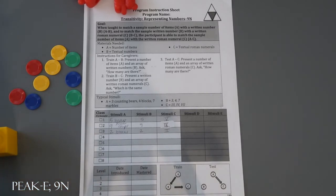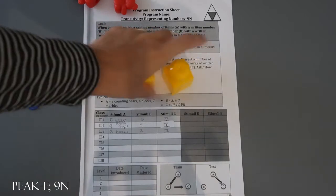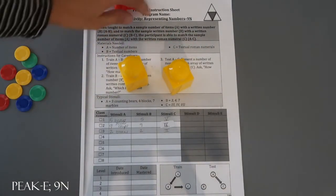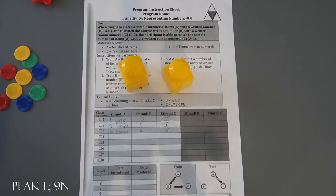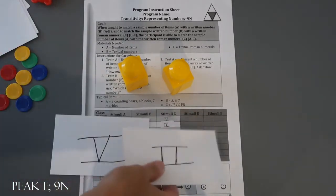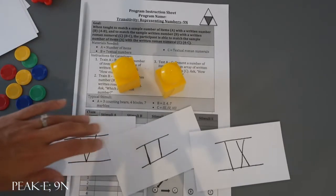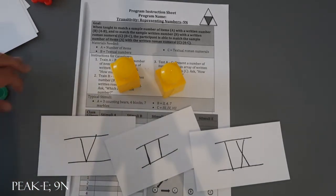Your third block of ten is test A to C. That's going to be putting whatever item you're running that trial for with the roman numerals. For tests, you're not giving any feedback, prompting, or reinforcing. You're just testing it.